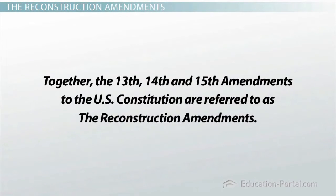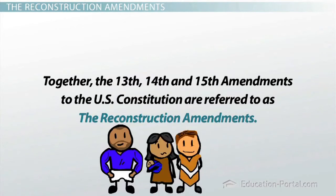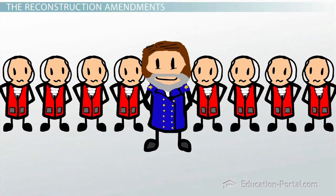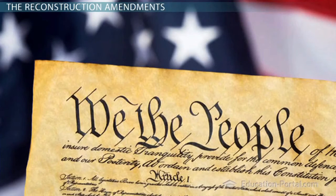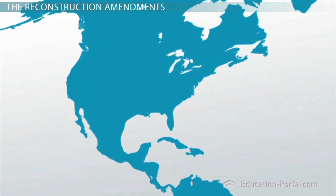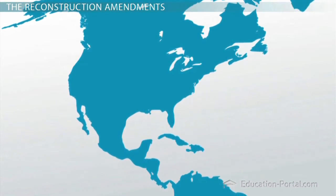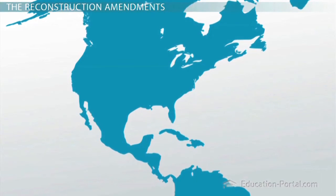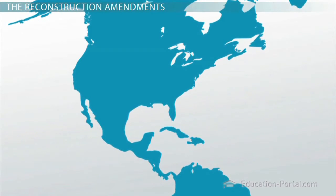Together, the Thirteenth, Fourteenth, and Fifteenth Amendments to the U.S. Constitution are referred to as the Reconstruction Amendments. They address slavery, citizenship, and voting rights. The radical Republicans didn't always have the purest motives. They didn't always use the most democratic methods of achieving their goals. And America is still not always perfectly equal. But history has proven that the controversial Reconstruction Amendments, which were designed to guarantee the rights of freed slaves, have helped to create one of the most free, most democratic societies in the world today.